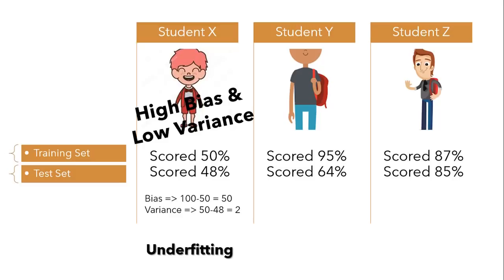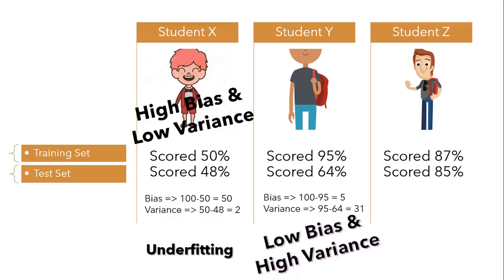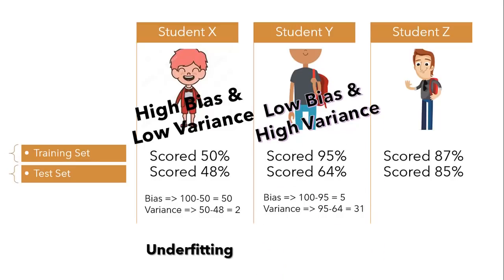Student Y is a perfect example of overfitting — performing really well on training data with only 5% error (100 minus 95), but on test data it drops significantly, giving variance of 95 minus 64 = 31, which is very high. We can conclude that when we have low bias and high variance, our model is overfitting on the data, where the model aims at the target but does not hit it consistently.